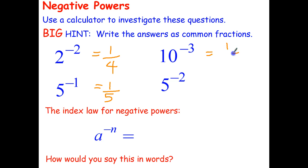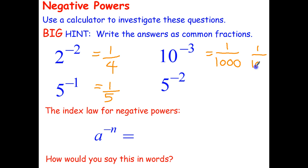Let's have a look at what we have so far and see if we can figure out how to interpret a negative power. Let's look at this one in particular: 10 to the negative 3 becomes 1 over a thousand. Well, a thousand is 10 to the power of 3, so 10 to the negative 3 becomes 1 over 10 to the positive 3. So it looks like we take the reciprocal of 10 — that's 1 over 10 — and we change the power to a positive power.